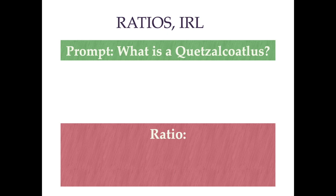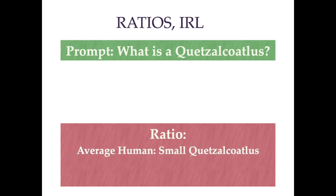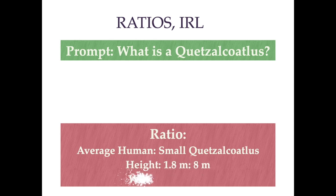I'm going to give you a ratio between the average human and a small Quasicotellus. The ratio of their height is 1.8 to 8. The average human arm span is 1.8 meters, but the width of their wings is 10 meters. We're talking about meters here. If you're just looking at these numbers, maybe it's not going to mean much to you, but I want you to look at this picture.